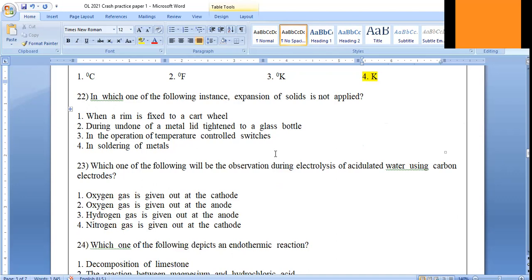Question number 23 is coming from unit number 12 of grade 10. When you do electrolysis of acidulated water using carbon electrodes - what is happening there? Oxygen making process is an oxidation process, hydrogen making process is a reduction process.